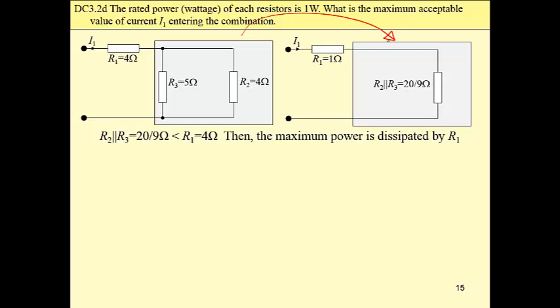And now this resistance is less than R sub 1. We are absolutely sure now that R sub 1 dissipates more power than R sub 2 or R sub 3.